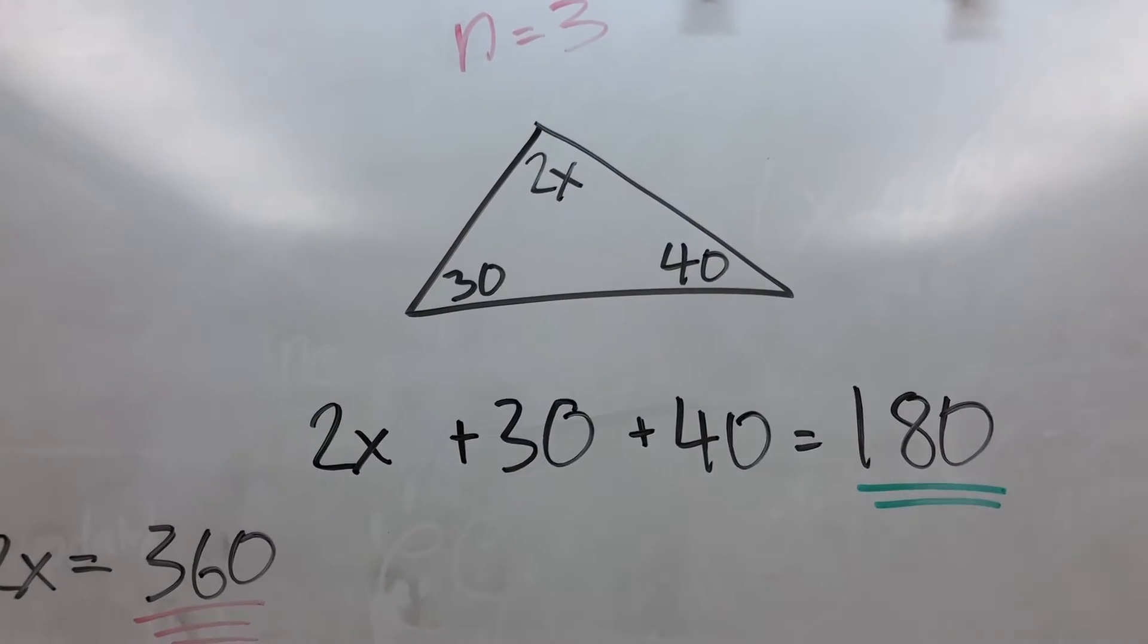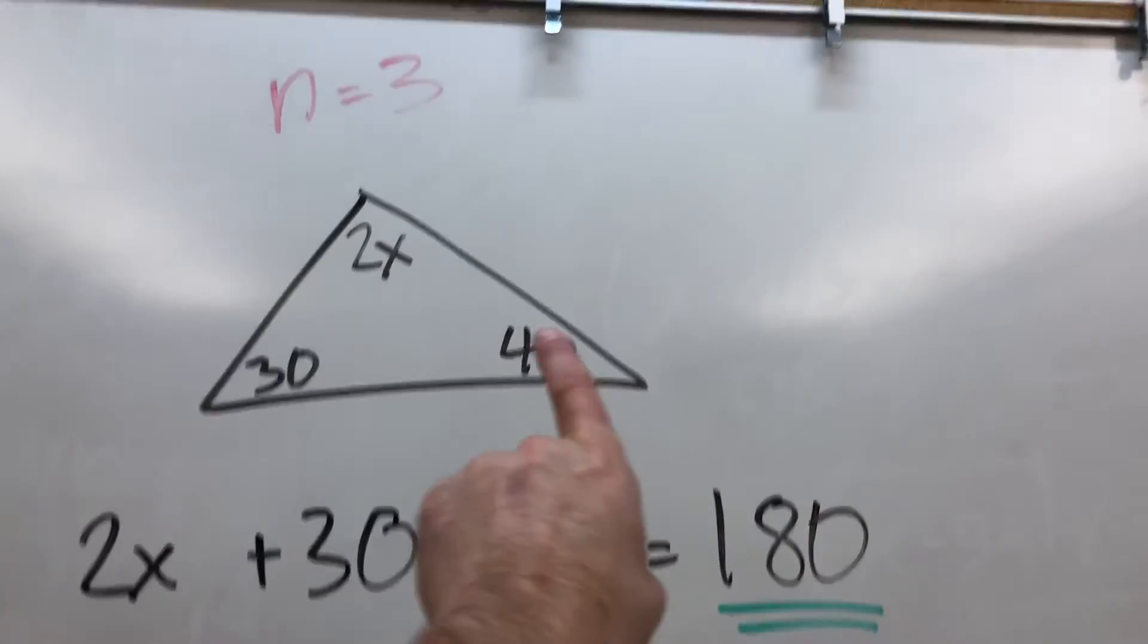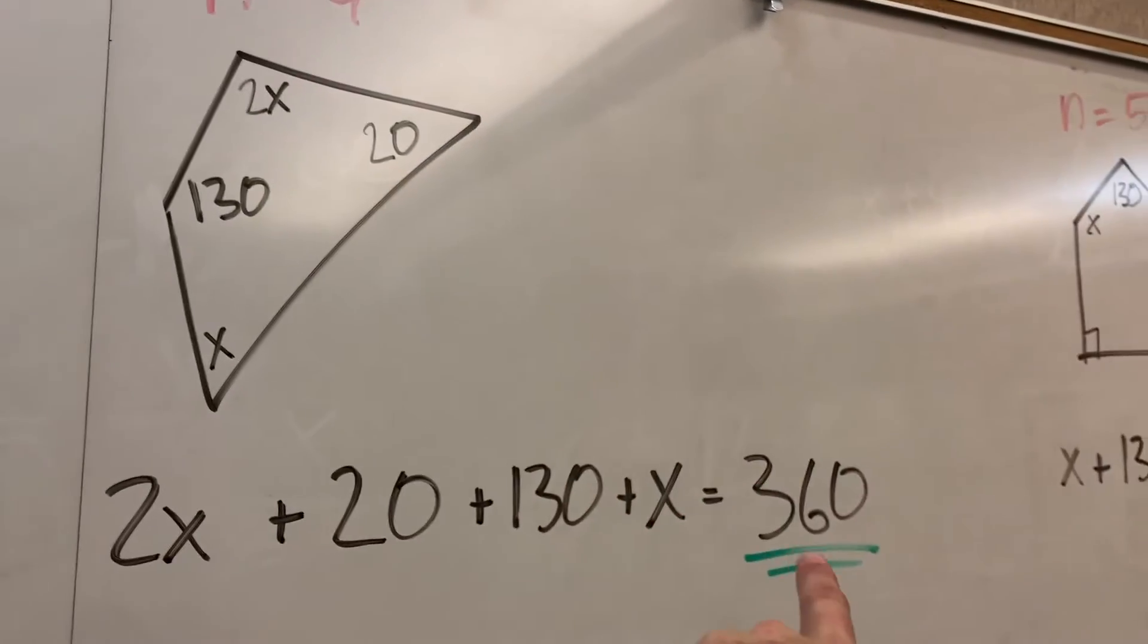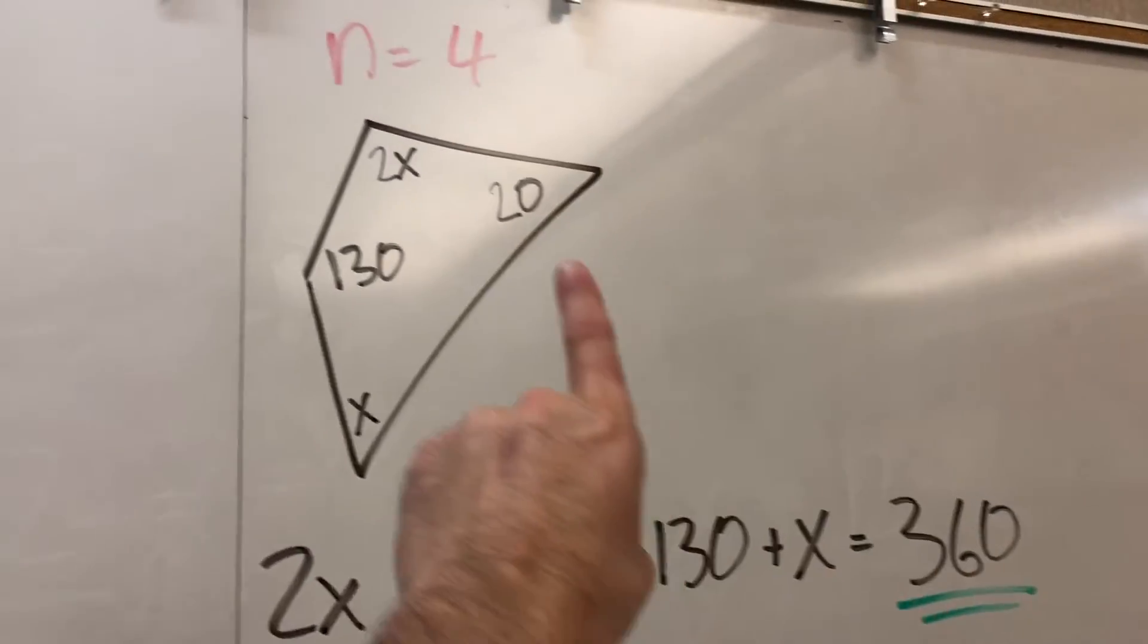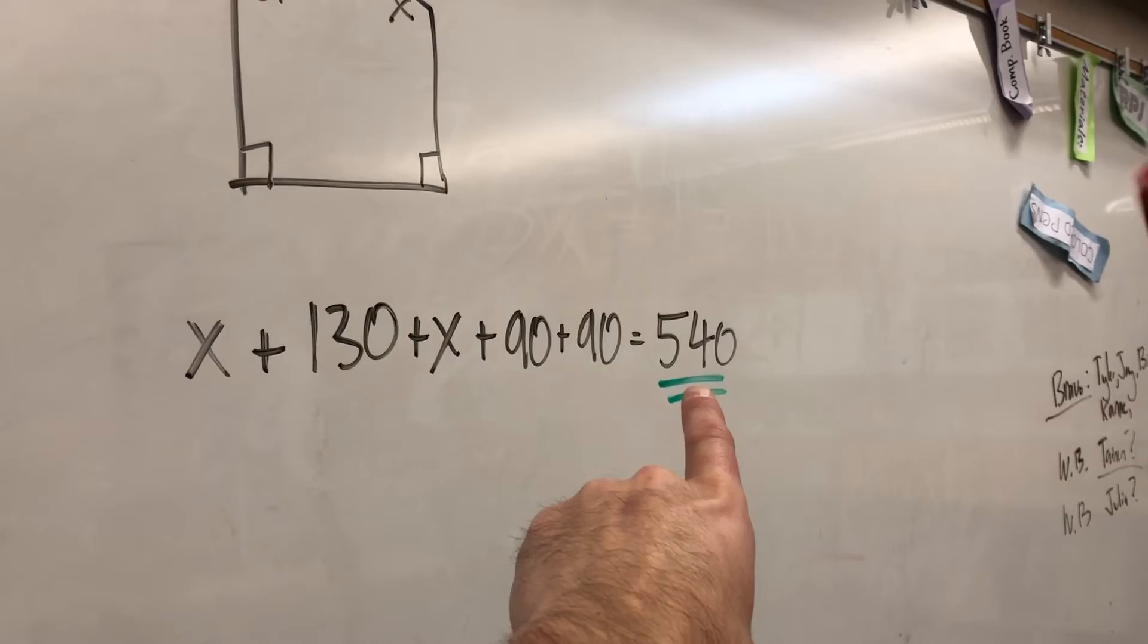To find the interior angle sum of a polygon, like I said, you have to remember a triangle is 180. Every time you add a side, you have to also add 180 degrees to your magical number. Add a side, add another 180 degrees.